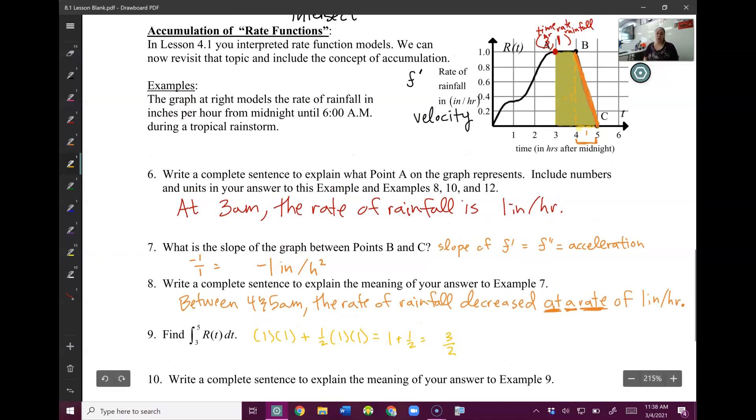If this is f prime, the first derivative, and I take the integral of the first derivative, then what this really is, this is the original. The integral of the derivative is the original, or position. So the units on this one is not a rate anymore at all. This is the original, so this is just 3 and a half inches.